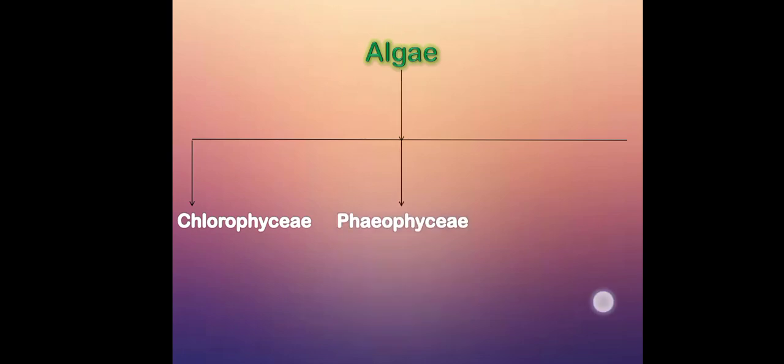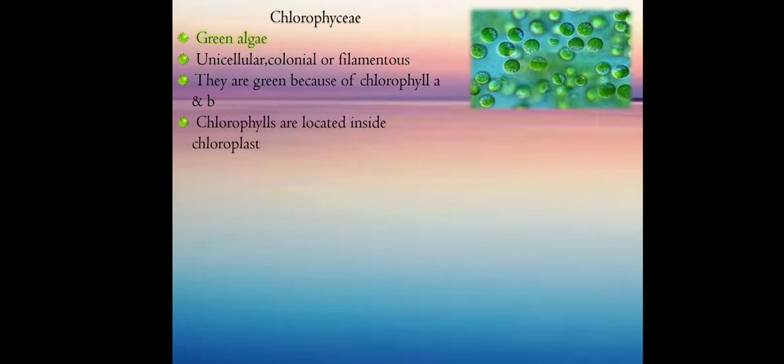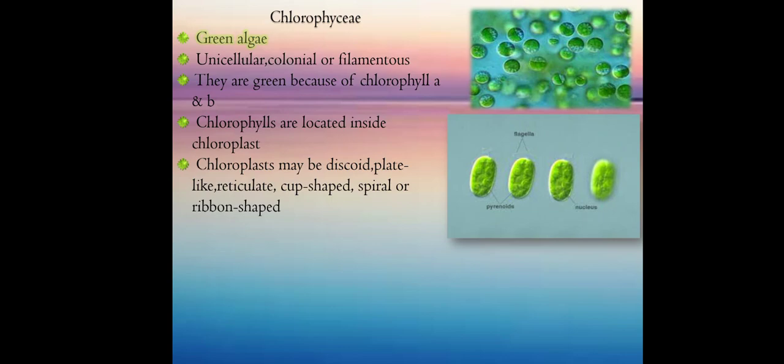Algae is subdivided into three different types: Chlorophyceae, Phaeophyceae, and Rhodophyceae. We will discuss Chlorophyceae first. They are also known as green algae. They are unicellular, colonial, or filamentous algae. They are green because of the green pigment chlorophyll a and chlorophyll b, and this is situated inside chloroplast. Chloroplast is a cell organelle inside every plant cell.